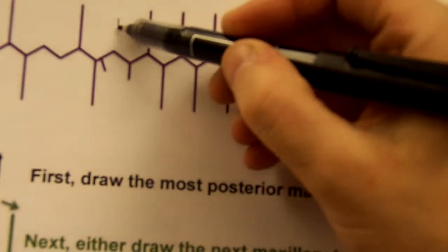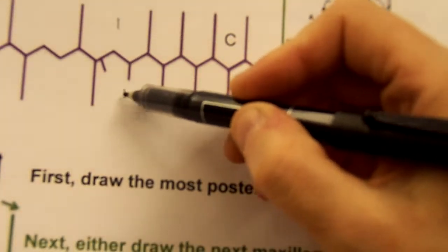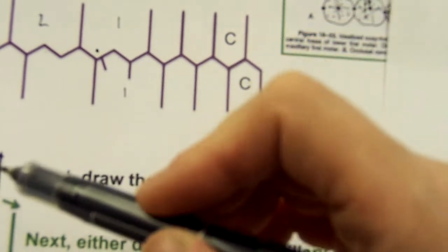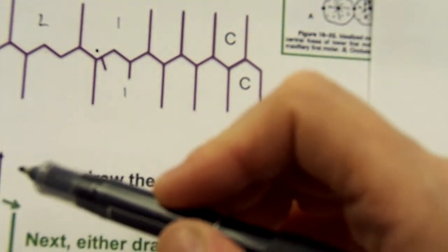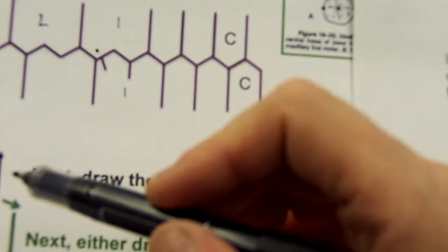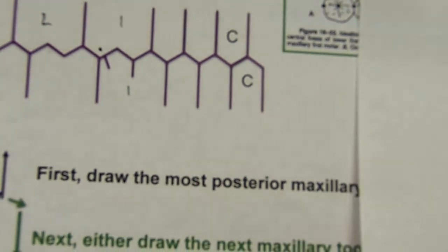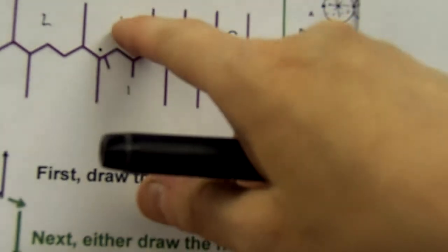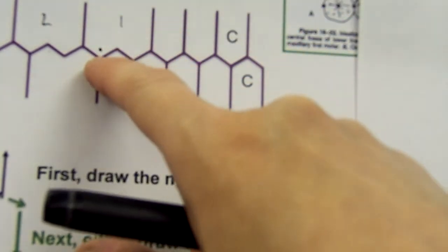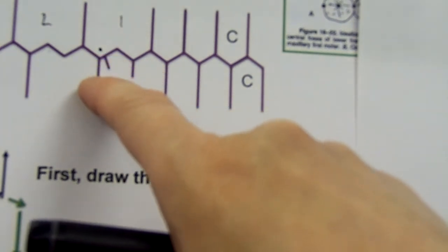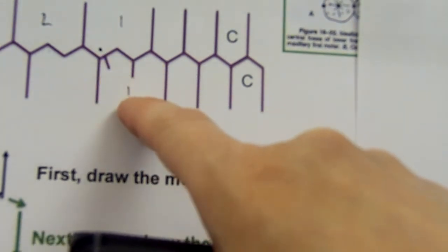Here's our maxillary first molar — the distal facial cusp. Maxillary first molar distal facial cusp. And it opposes which feature on a mandibular first molar?